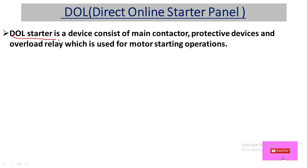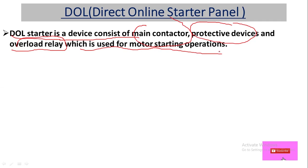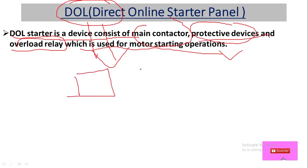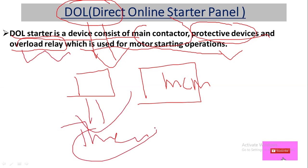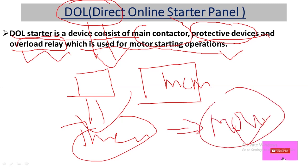A DOL starter is a device consisting of a main contactor, protective devices such as an MCB, and a thermal overload relay. In case there is an overload on the motor or pump, the overload relay will protect it. Basically this device is used for motor starting operation.